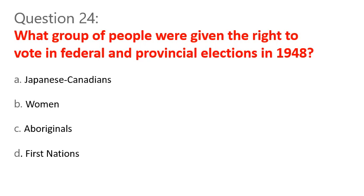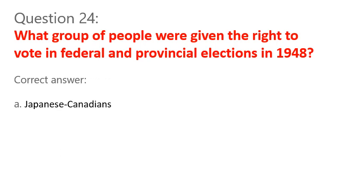Question 24. What group of people were given the right to vote in federal and provincial elections in 1948? A. Japanese Canadians. B. Women. C. Aboriginals. D. First Nations. Correct answer: A. Japanese Canadians.